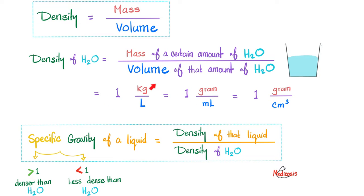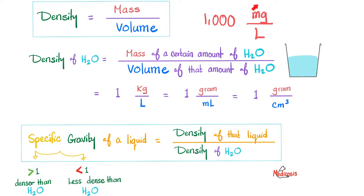But hey, Medicosis, I read before that the density of water is 1,000, not 1. Where did they get the 1,000 from? Easy. You can say that the density of water is 1,000 milligrams per liter, since 1 kilogram has 1,000 milligrams.